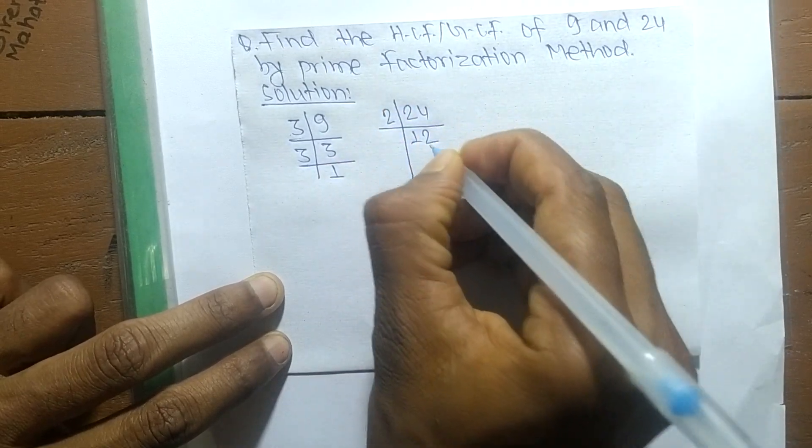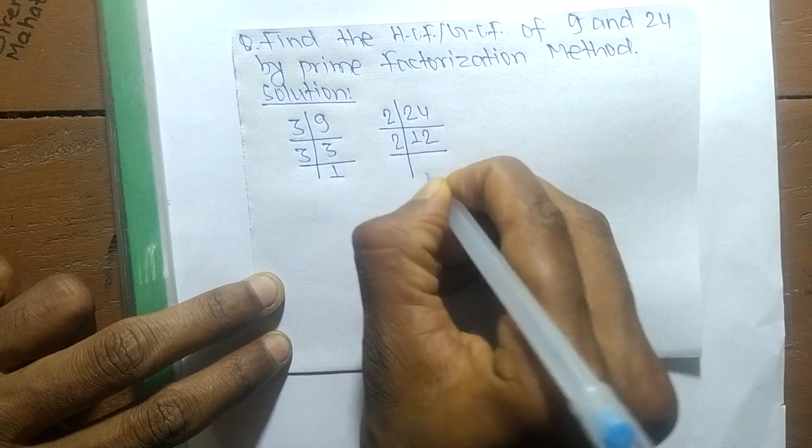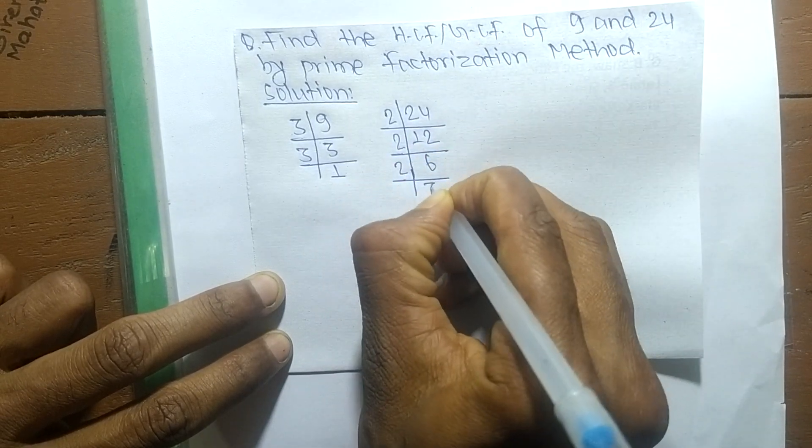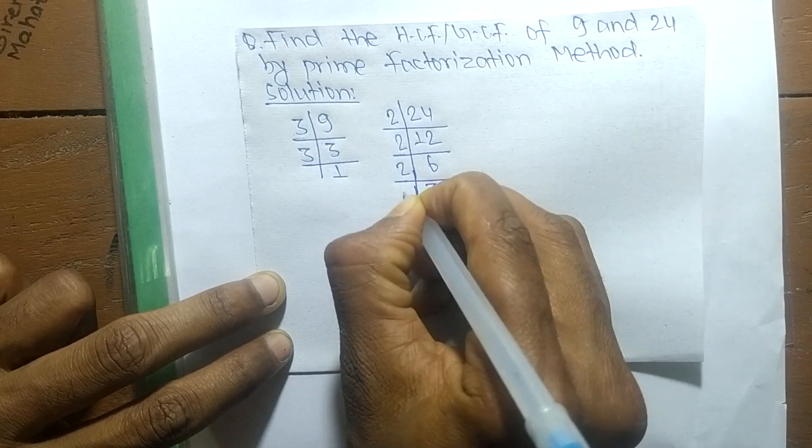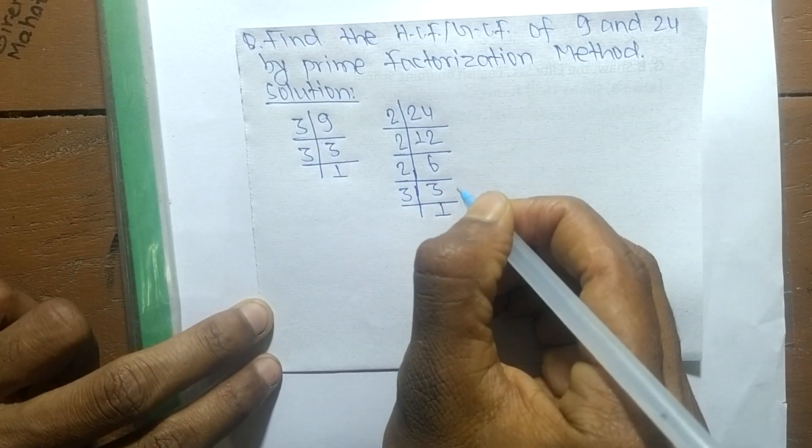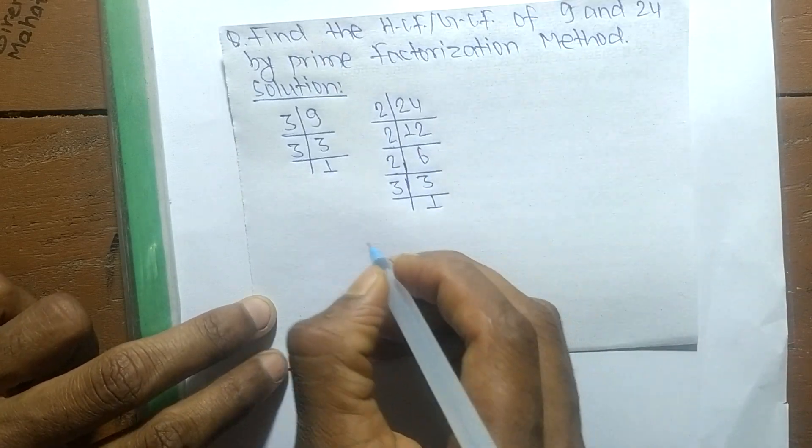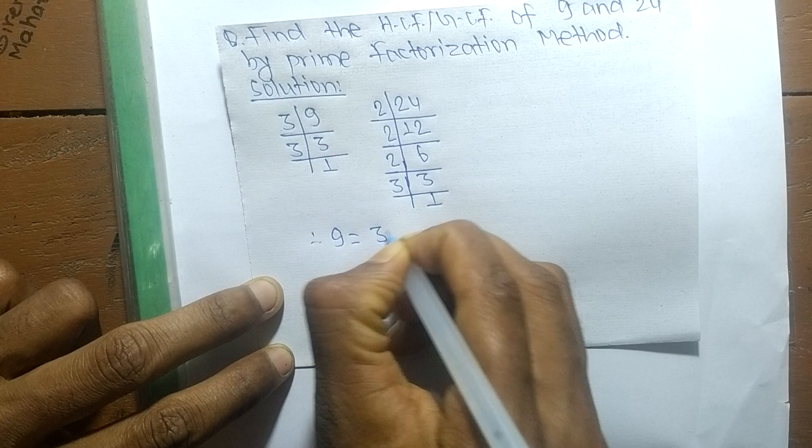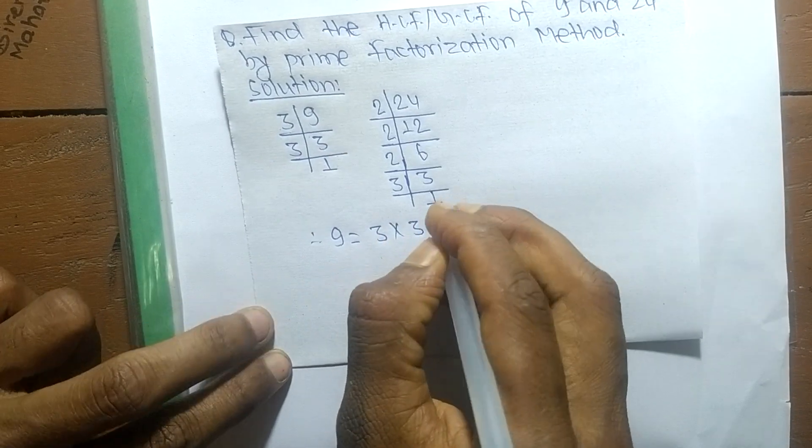2 times 6 equals 12, like 2 times 3 equals 6, and 3 times 1 equals 3. So from these prime factors we can write 9 is equal to 3 times 3.